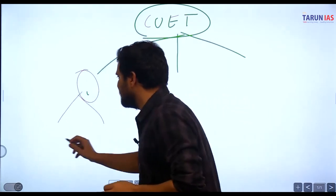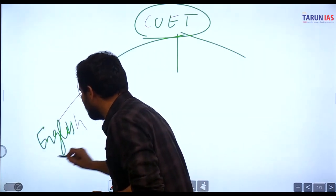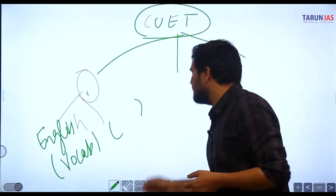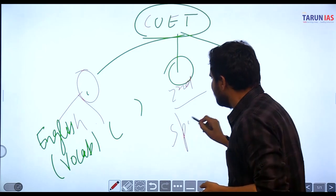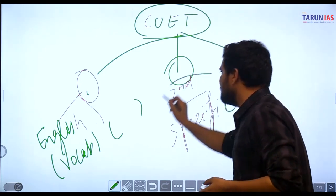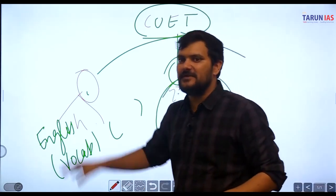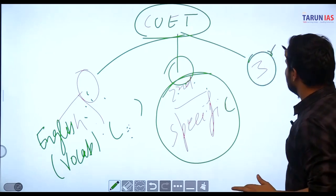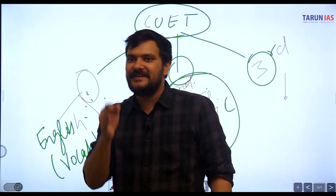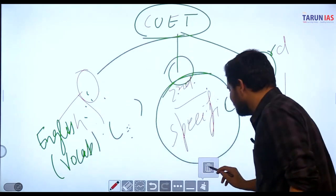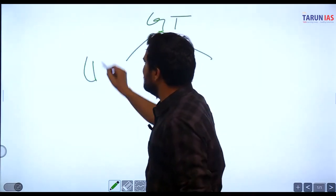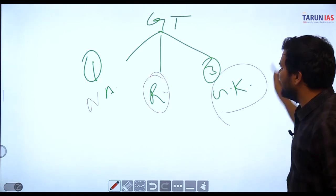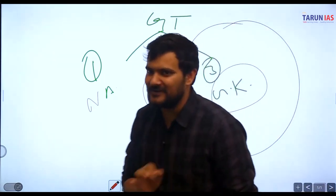Your CUET exam pattern has three sections. First is the language section - here you have to focus on two things: vocabulary and grammar. The second section is domain-specific - we are not going to cover that. We will only cover the first section on vocab and grammar, and also the third section which is the general test. The general test includes three things: numerical ability, reasoning, and GK.